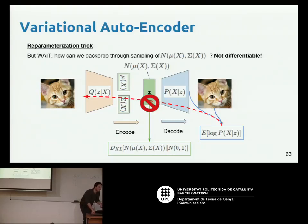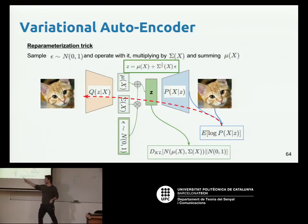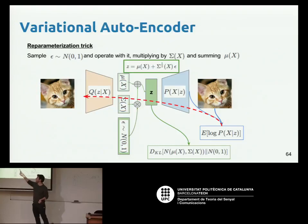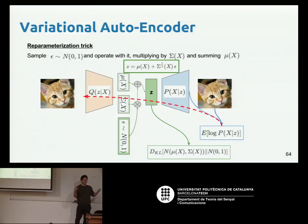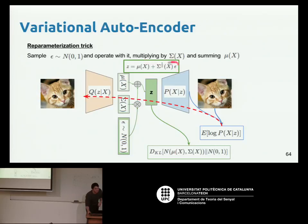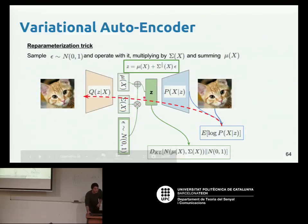The solution is the reparameterization trick: instead of sampling inside the model, we sample epsilon from a standard normal distribution externally — outside the computational graph — then compute z as mu plus sigma times epsilon. These multiply and add operations are differentiable, so gradients flow end-to-end. Now the full model is trainable: z becomes the product with epsilon summed with mu, which are the predictions of the encoder.